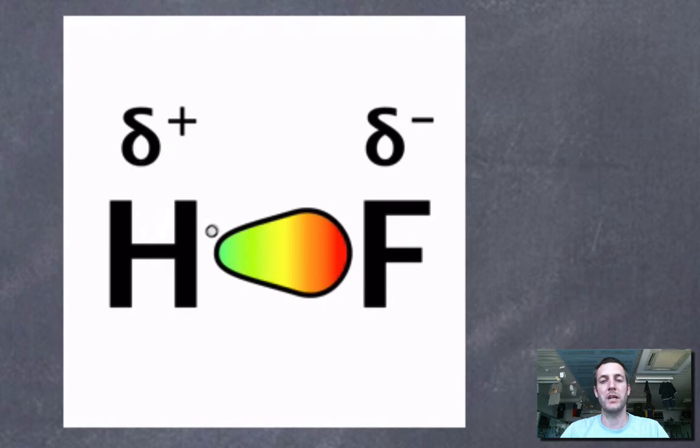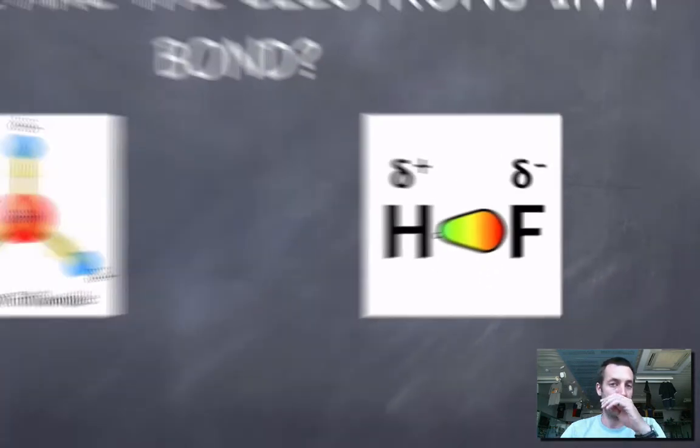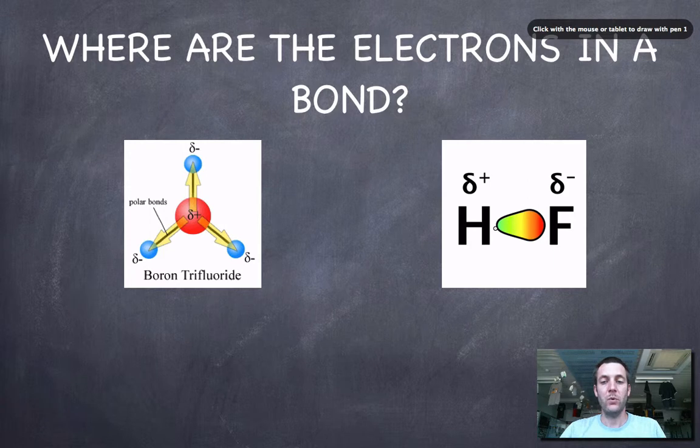Sucking them away from the hydrogen, making the hydrogen slightly positive. So any bond where the electrons aren't in the middle, where they're being unevenly shared between the two atoms, will be a polar bond.